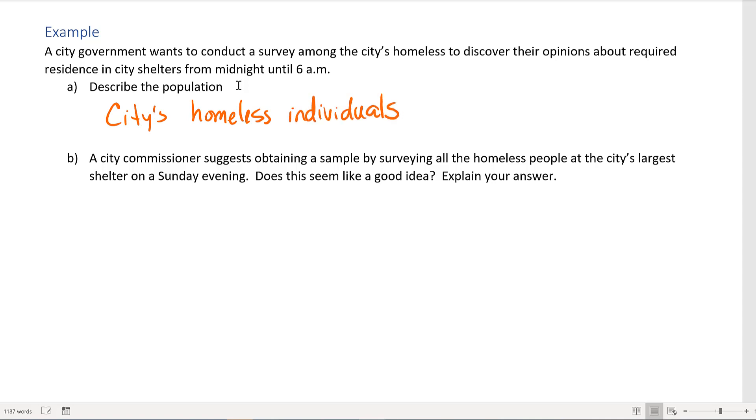Part B: A city commissioner suggests obtaining a sample by surveying all of the homeless people at the city's largest shelter on a Sunday evening. Does this seem like a good idea? Explain your answer. Remember what we're trying to identify in the study.